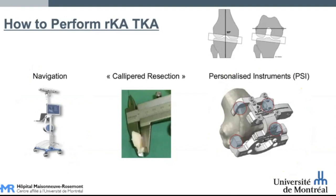There are multiple ways to perform kinematic alignment total knee arthroplasty. However, if you want to use the restricted kinematic alignment protocol, it is better to have direct feedback of the patient's anatomy either during surgery or in the pre-op period with personalized instruments. These two tools will allow you to decide exactly on the post-operative alignment that you want to achieve.